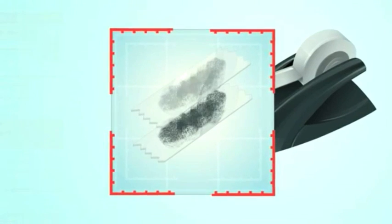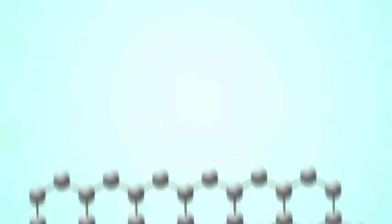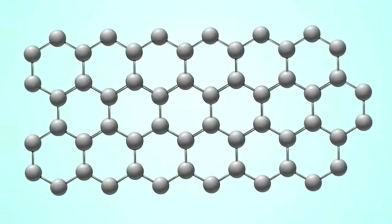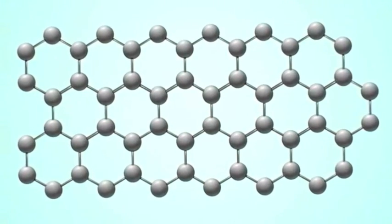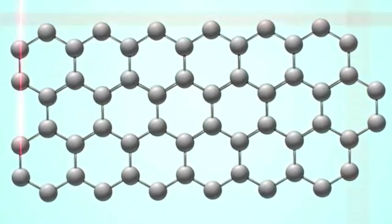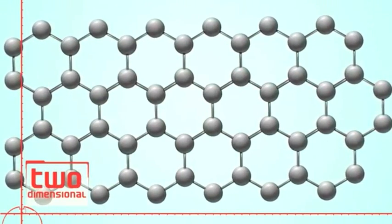a team at UCLA found a way to make graphene more efficiently by using the light scribe feature on an optical DVD drive. This innovation in fabrication represents a significant breakthrough in reducing the cost of making graphene in production scale quantities.